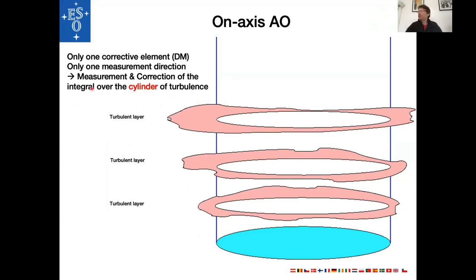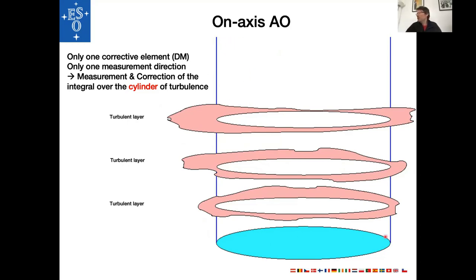Light from natural stars propagates through a cylinder of atmosphere above the telescope. Here I've represented turbulence layers; the white ovals are the areas we are trying to measure. We try to correct the integral of turbulence over this cylinder. The problem is that to measure this cylinder we need a star, and unfortunately there are not that many stars in the sky that are bright enough for this analysis.